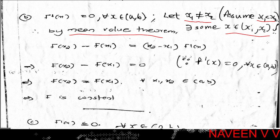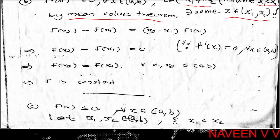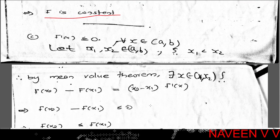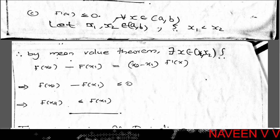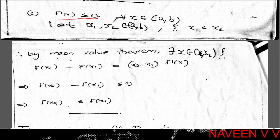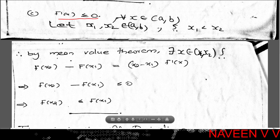Since f'(x) = 0 for x in open interval (a, b), we get f(x2) - f(x1) = (x2 - x1) · 0 = 0, that is f(x2) = f(x1). This completes the proof of part two: f'(x) = 0 implies f is constant.